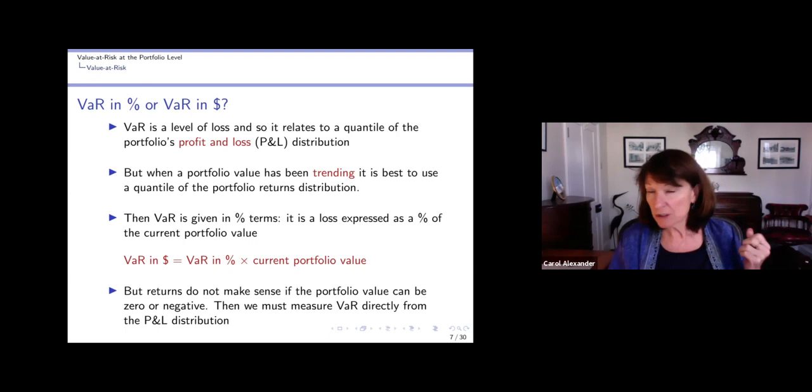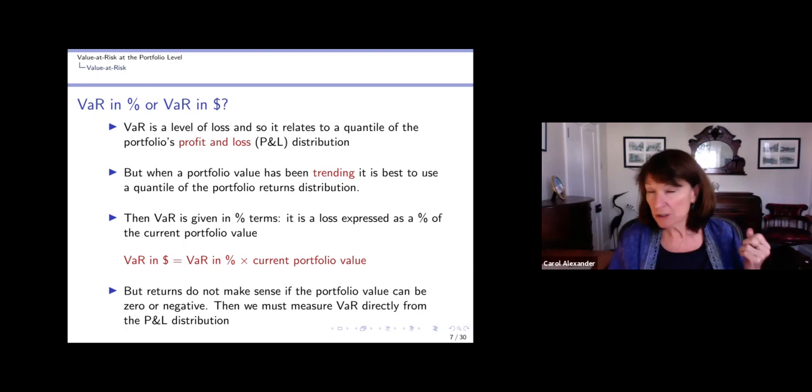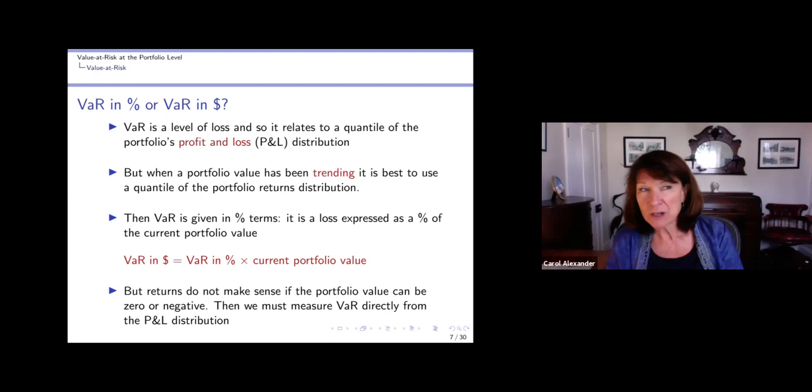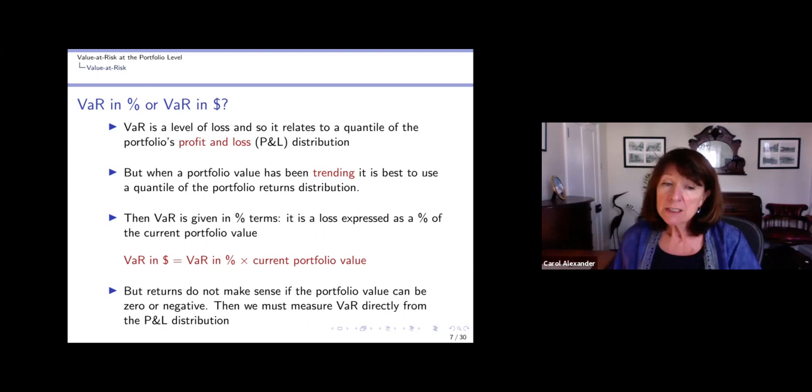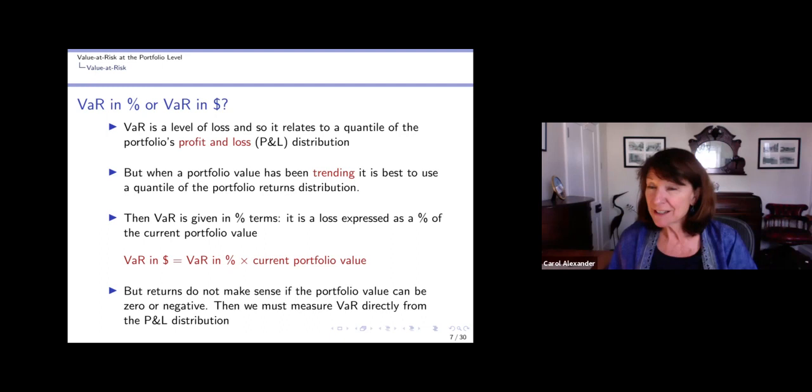Now it relates to a quantile of the portfolio's profit and loss distribution. It's a level of loss, it's measured in dollars. But if a portfolio has been trending, as we've known from a previous video, the P&L is not so representative. Five years ago, a profit and loss of half a million may have seemed enormous, but now because things have grown so much in value, half a million is actually not that significant. Or it could be the other way around if things have been trending downwards.